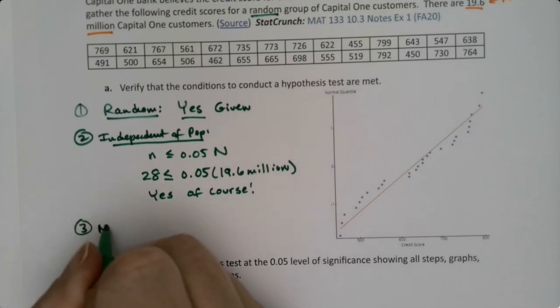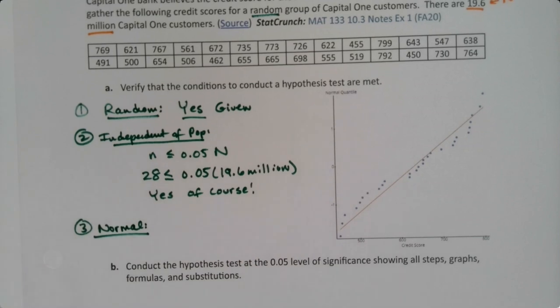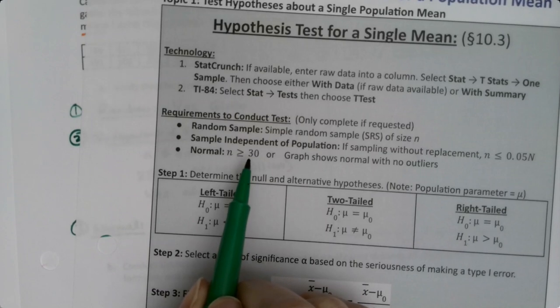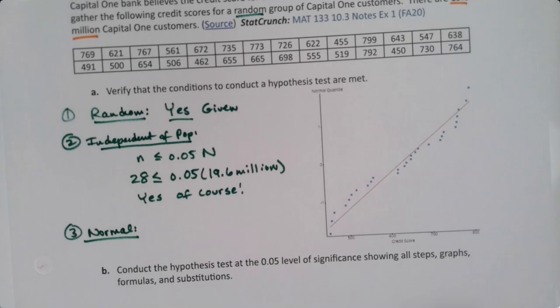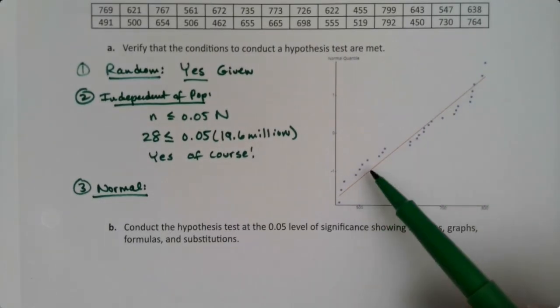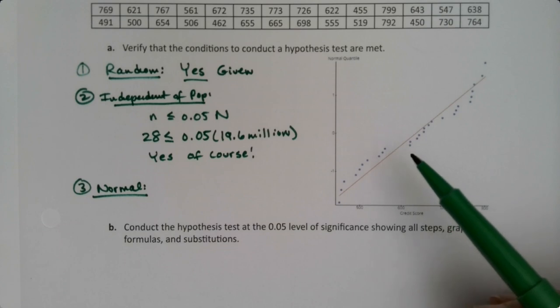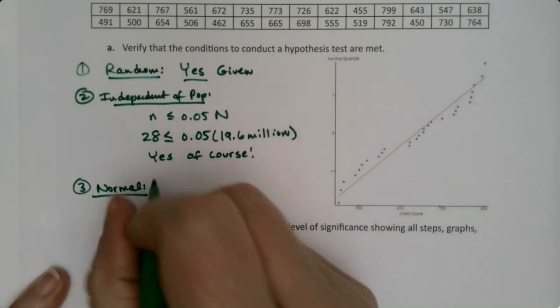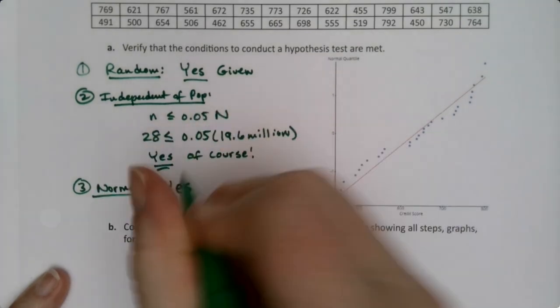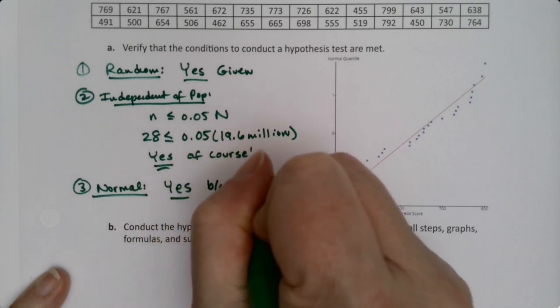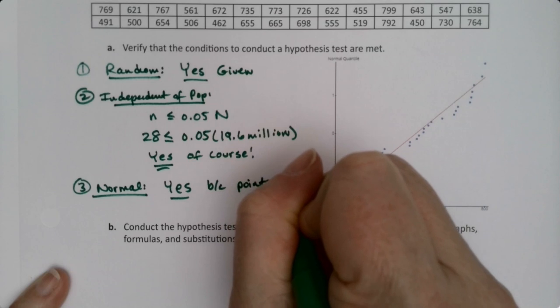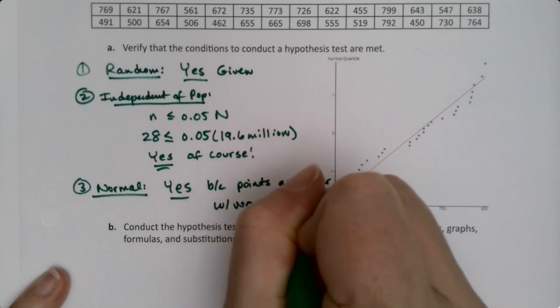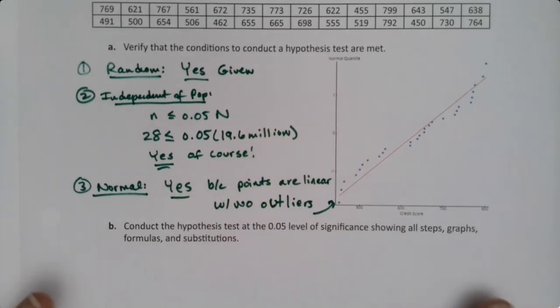So then what about normal? Well normal is a little trickier because normal requires that N be bigger than 30 which we don't have, or that we have a graph. Say like a normal probability plot like this. And we saw these in chapter 7. They're everybody's favorite section so they're so quick. So this would be because these points are linear-ish then we'll say that it's normal. So yes. Oh this was yes. And this is yes because the points are linear with no outliers in that graph. That's what the graph is there for.